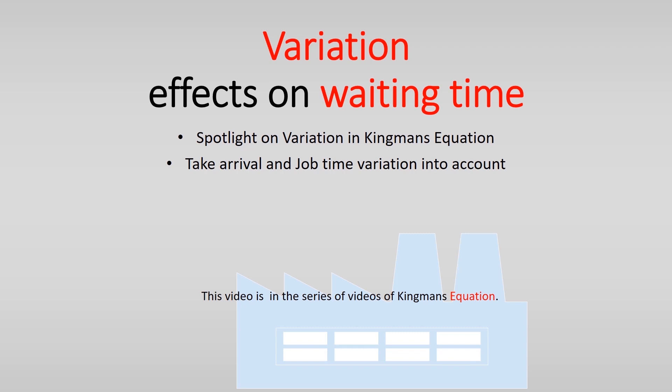This video explains the effects of variation on the queue and waiting time of process. We take the last bit of Kingman's equation and focus on the direct effect of variation on the queue. We expect that you already have seen the introduction video about Kingman's equation and the video explaining the effect of utilization.